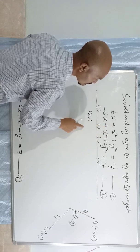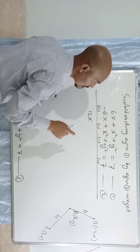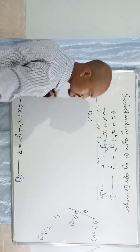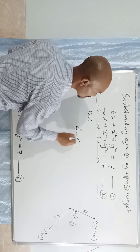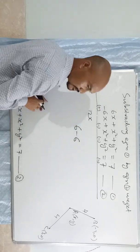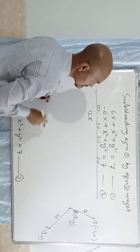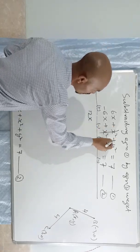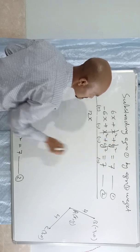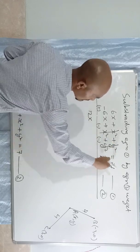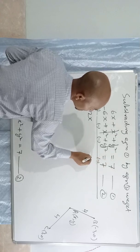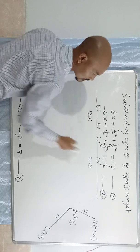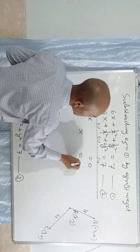Now, plus x squared minus x squared equals zero. Plus y squared minus y squared equals zero. So 7 minus 7 is 0. So we have 12x equals 0.